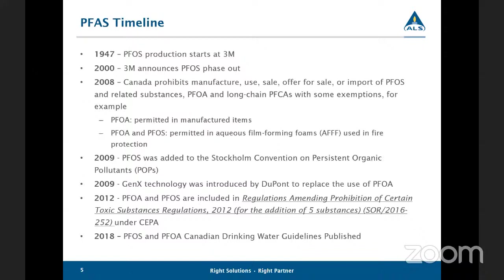This is just a quick overview of the timeline around PFAS. Production of PFOS started in the 1940s and was eventually phased out in 2000. In 2008, Canada prohibited PFOS and related substances, PFOA and long-chain PFCAs with some exceptions. And then more recently, the drinking water guidelines for PFOS and PFOA were published in 2018 for Canada.